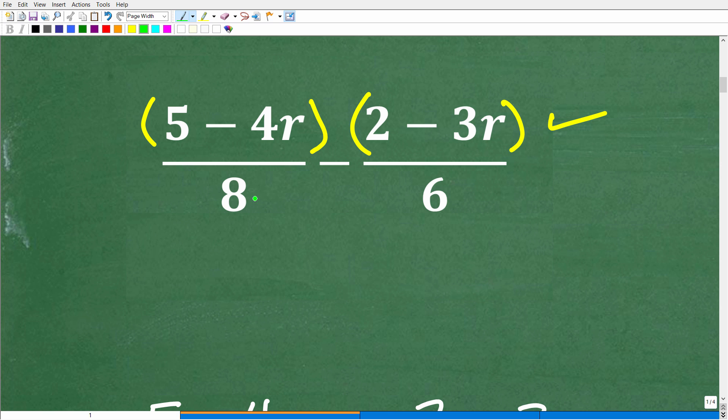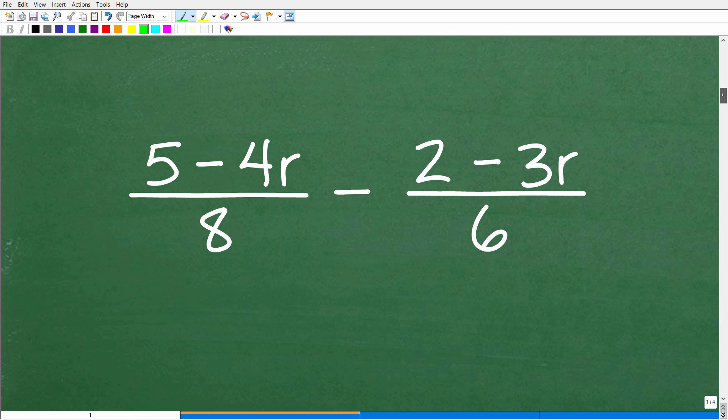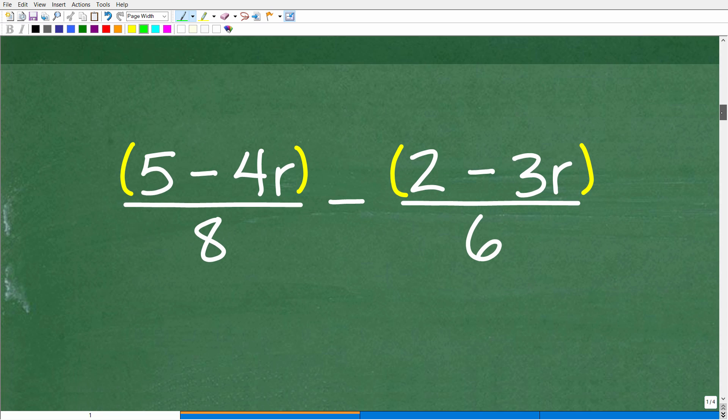Now, we do have these rational expressions and we need to be thinking about the lowest common denominator. So here is our problem. Again, the first thing I'm going to do is I'm going to have effectively two fractions, two rational expressions. I need to put my parentheses in and then I need to be thinking about the lowest common denominator. So we have eight and six. What is the LCD when the denominator is eight and six? Well, hopefully, again, you're up to speed on basic fraction operations, but the LCD is 24.